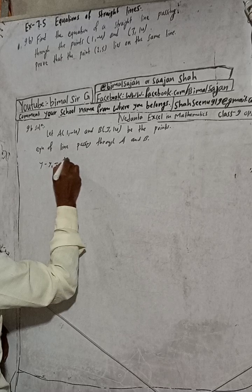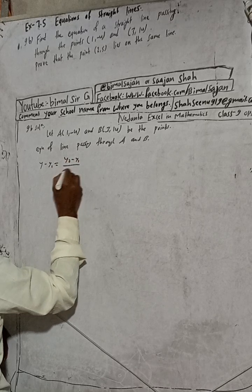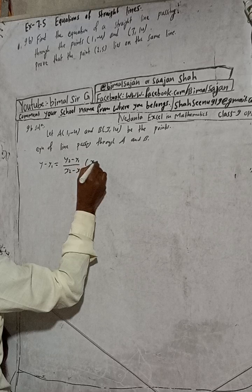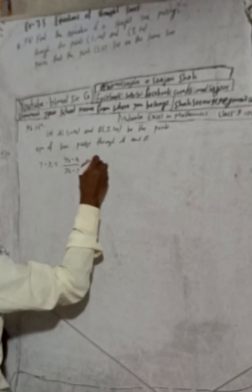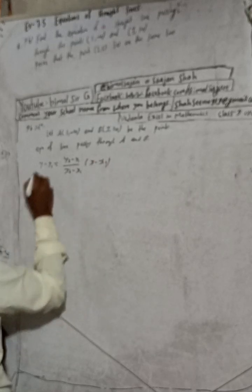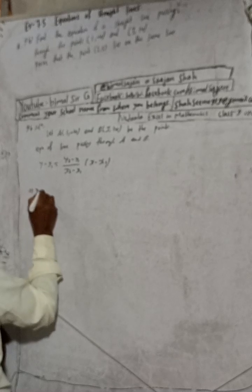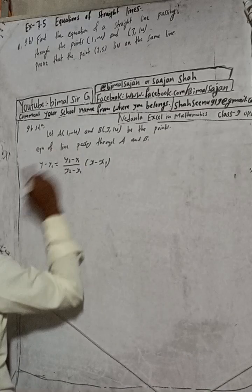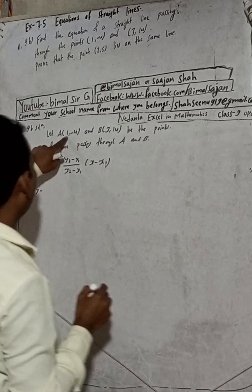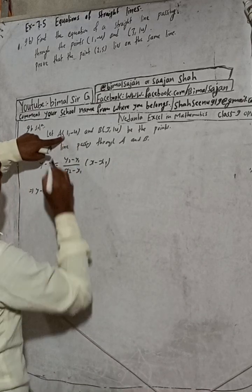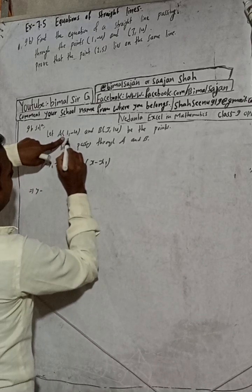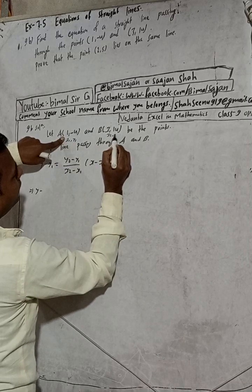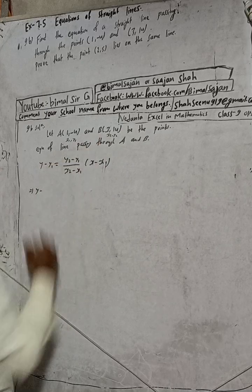The equation of a line is: y minus y1 equals (y2 minus y1) divided by (x2 minus x1), multiplied by (x minus x1). Here, (x1, y1) is point A and (x2, y2) is point B. For convenience, I will label these values.